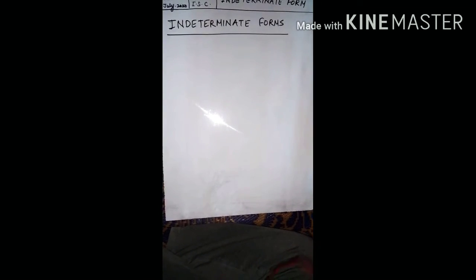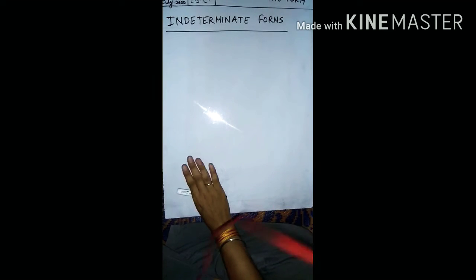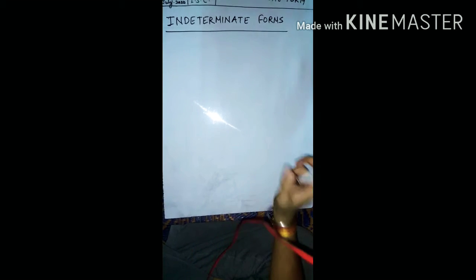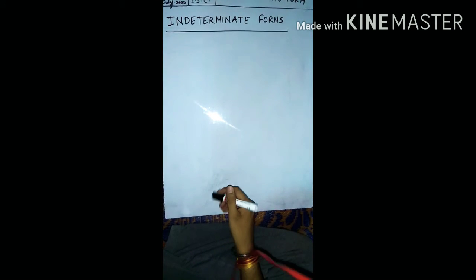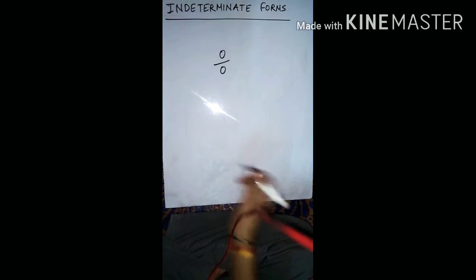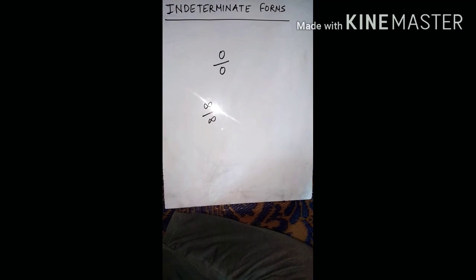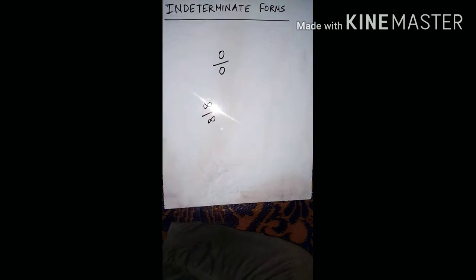From the name you can understand: you know the meaning of 'determinate' — that is already known to us. 'Indeterminate' means there are certain forms that we could not think of. Like, have you ever seen 0 upon 0 form in mathematics? Or infinite upon infinite form? These are kinds of forms which are indeterminate — which we cannot determine. We are going to deal with those forms in this chapter.